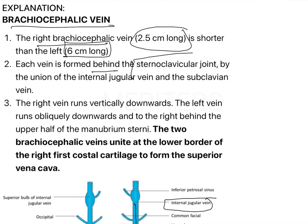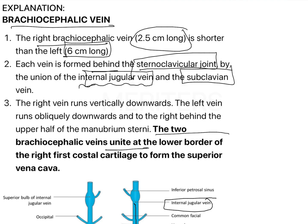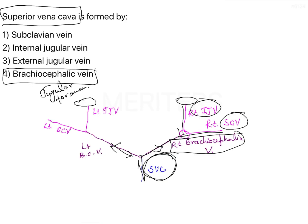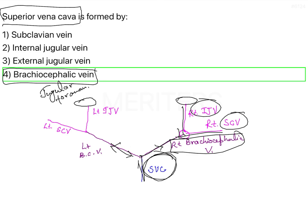Each brachiocephalic vein is formed behind the sternoclavicular joint, where the internal jugular vein and subclavian vein unite. The brachiocephalic veins unite at the lower border of the right first costal cartilage to form the Superior Vena Cava — that is the landmark. So the correct answer is option 4: brachiocephalic vein.